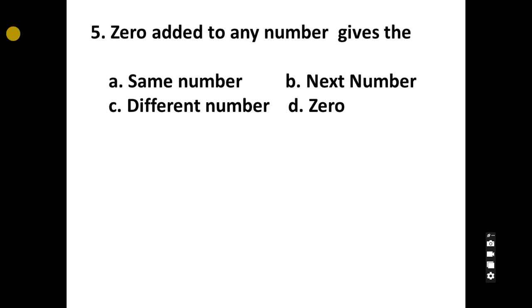5. Zero added to any number gives the A, same number, B, next number, C, different number, D, zero. Correct answer is Option A, same number.